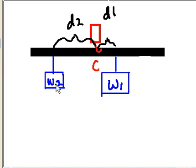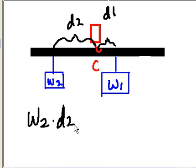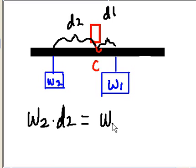Now the turning moment of the force — let's start on the left-hand side — will be W2 times D2. That's called the turning moment, and that has to equal the turning moment of the other side of the center point, the pivot point C, which will be W1 times D1.